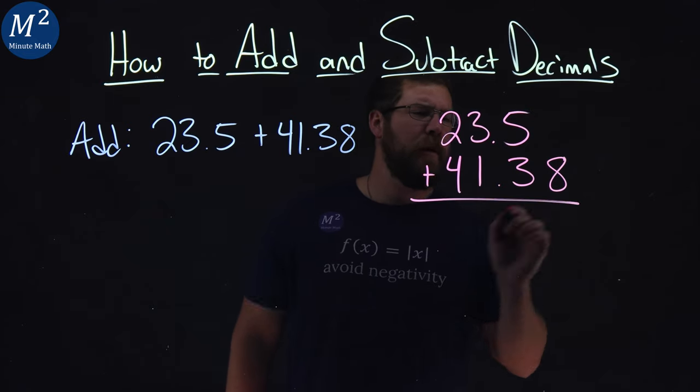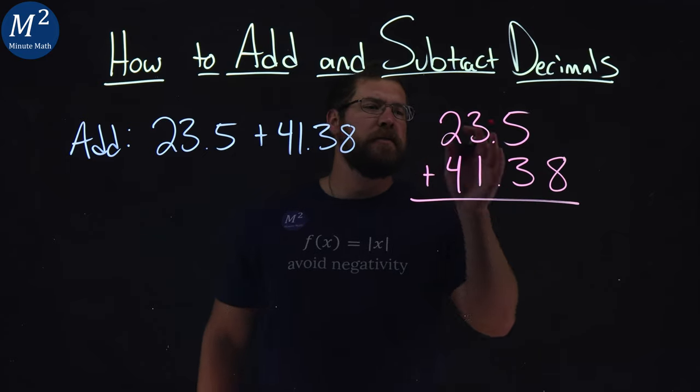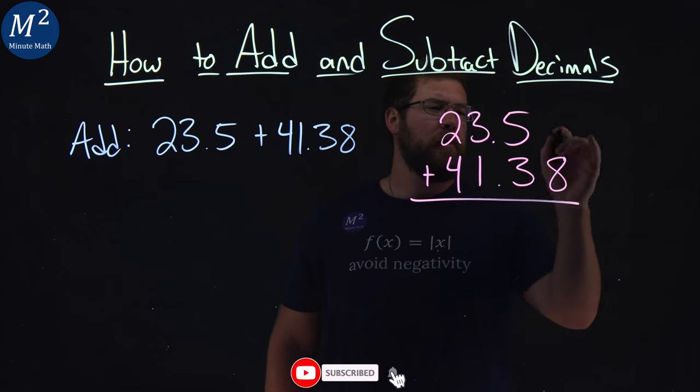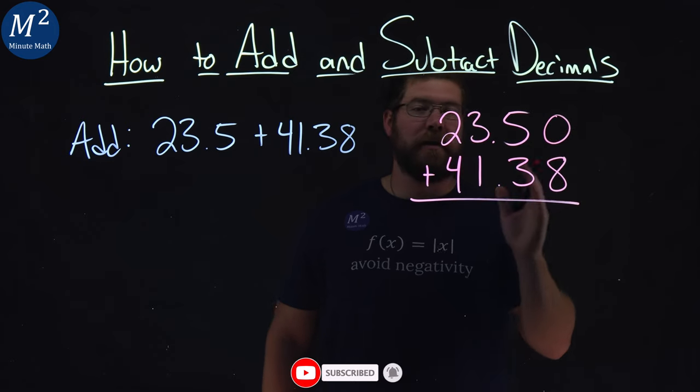We want to add these two numbers. Now, notice our first number, 23.5, doesn't have a place value here, right? So we're just going to add a 0 to that to make sure it lines up.